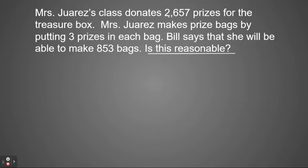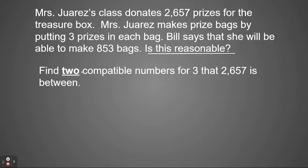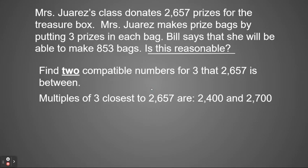So we have the problem 2,657 divided into three, into groups of three. So we're going to divide that by three. So to do this, we're going to find two compatible numbers for three that 2,657 is between. So if I do multiples of three closest to 2,657, there are 2,400 and 2,700. So again, if I'm looking at 2,657, that's the same as 2,600s, and 2,400s and 2,700s are closest multiples of three.